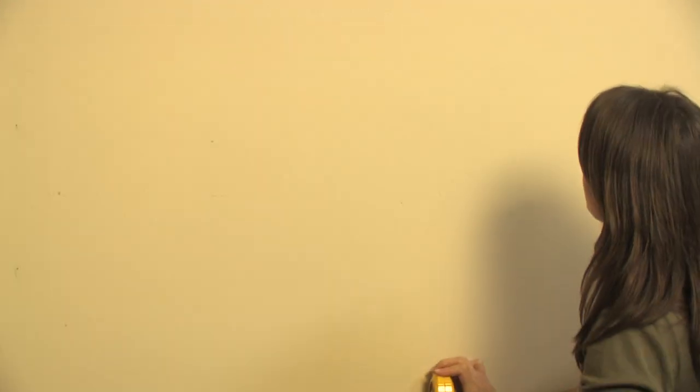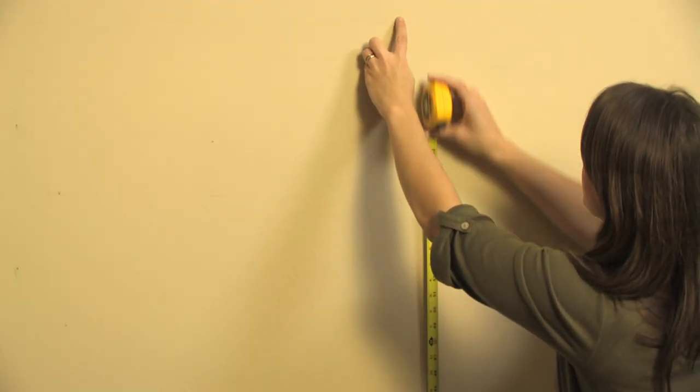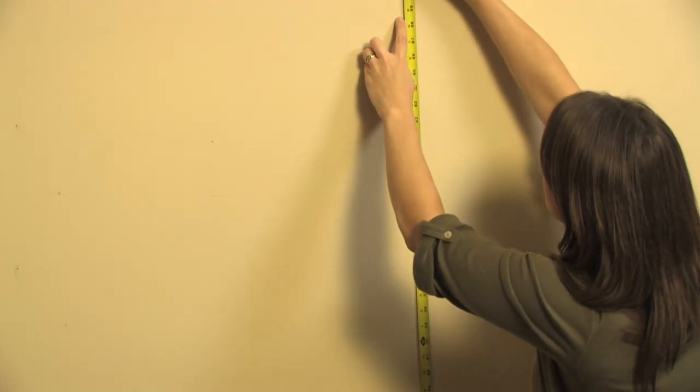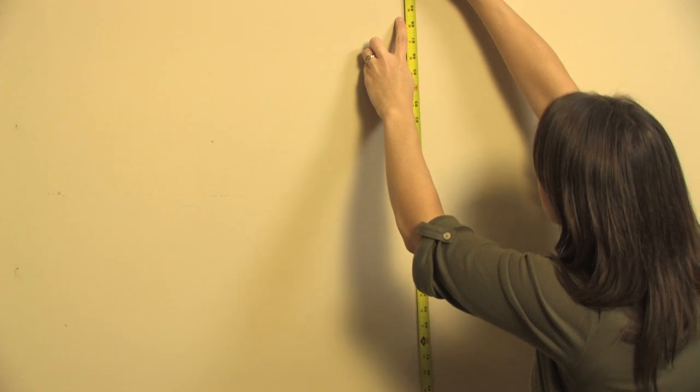Use a level to make sure that the two marks are level. You can measure the distance between each mark and the floor, making sure the distances are equal.